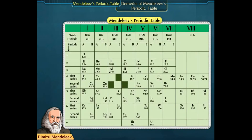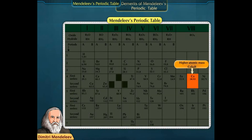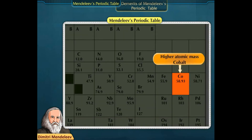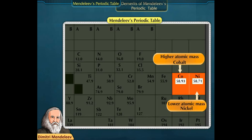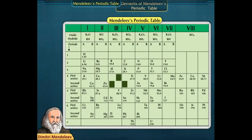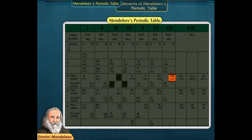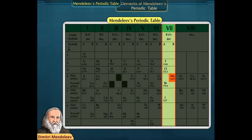It was observed that at certain places in the periodic table, an element with a higher atomic mass — like Cobalt with atomic mass 58.93 — was placed before an element with a lower atomic mass, Nickel with atomic mass 58.71. Additionally, certain chemically dissimilar elements were placed together; for example, Manganese was placed with halogens, though they are chemically dissimilar.